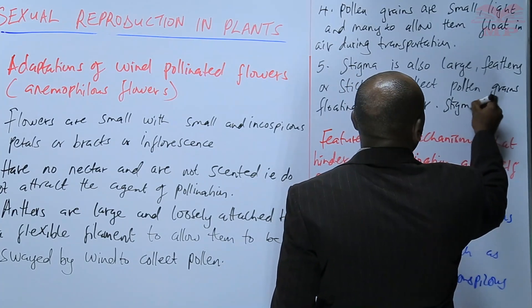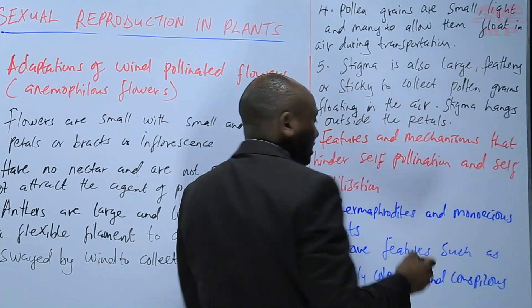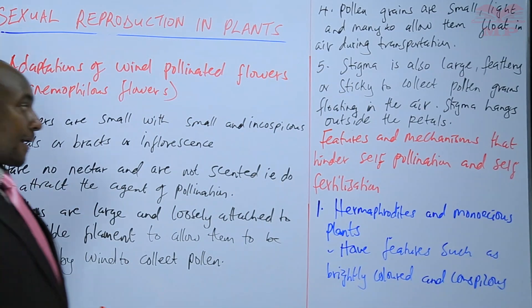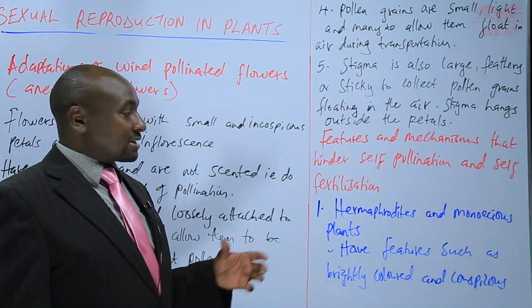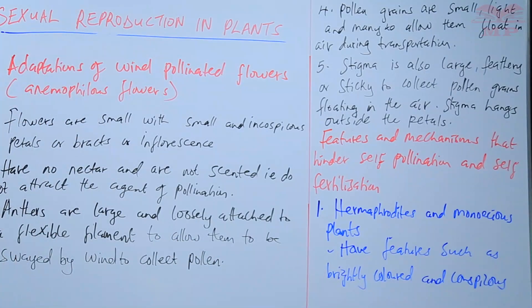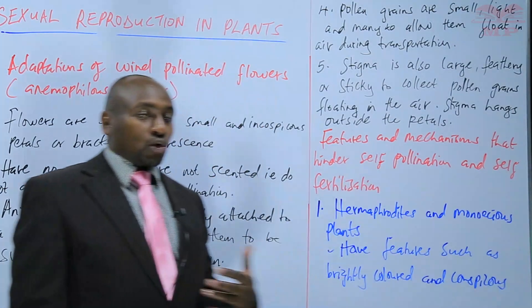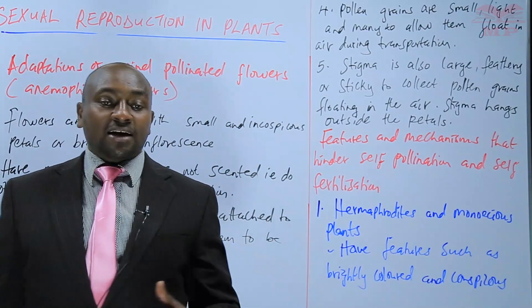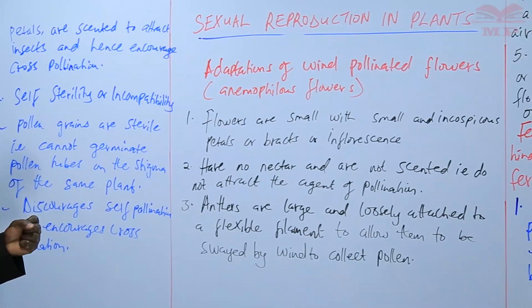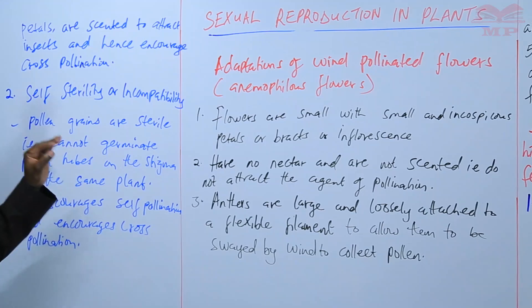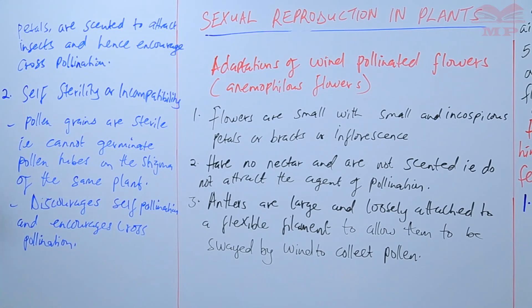We've also learned about the features and mechanisms that hinder self-pollination and self-fertilization. We've seen hermaphrodites and monoecious plants — these have special features that encourage cross-pollination: brightly colored and conspicuous petals, nectar, and scent. Number two, we've seen self-sterility or incompatibility, whereby the pollen grains are sterile to the stigma of the same plant and therefore cannot germinate pollen tubes. So we are going to stop there.